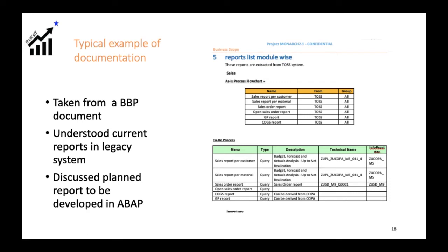I wanted to take an example from a business blueprint document. You can see that in the business blueprint document, there is a paragraph where the required reports are mentioned. Normally there is an as-is process where, in the legacy system, some reports are being used — those descriptions are given. When going into SAP, what kind of resources are required, what kind of reports are required, what ABAP changes are required because of those reports, and what ABAP efforts are required — all these must be captured. You can see the importance of ABAP where, from the business blueprint document — which is the starting document for SAP — ABAPers are being identified.